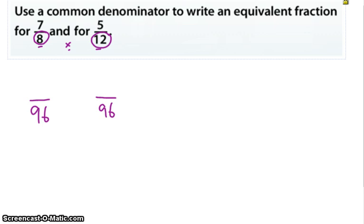Okay, and then you would say, all right, how many times did I multiply 8 to get to 96? Well, I multiply it times 12. So if I multiply the denominator by 12, I also multiply the numerator by 12, and 7 times 12 is 84.